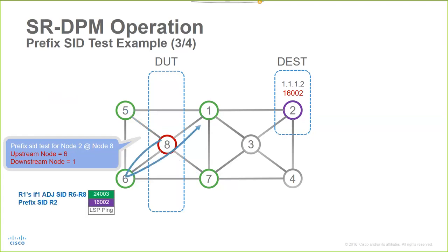In the third iteration, the node verifies the LSP to router number 2, but now using router number 6 as an upstream and router number 1 as a downstream.